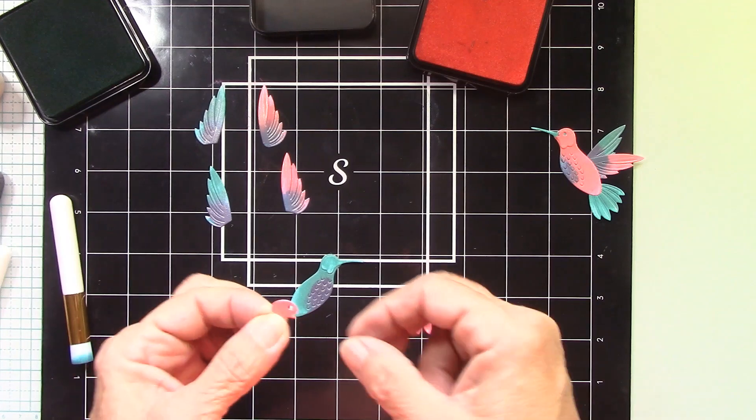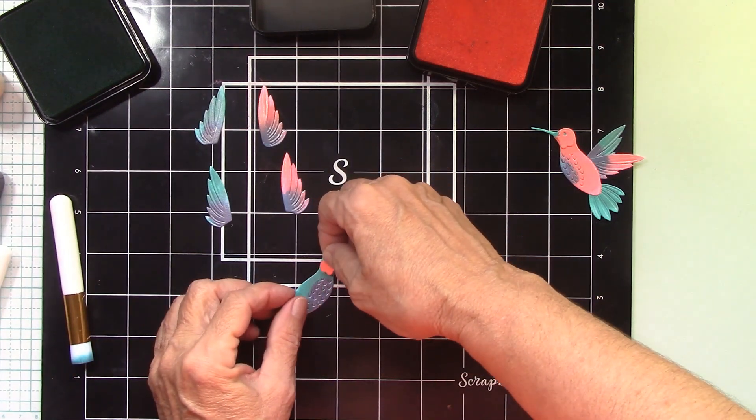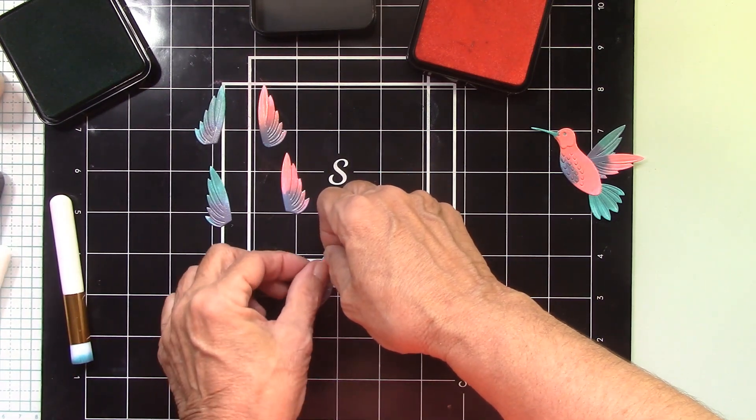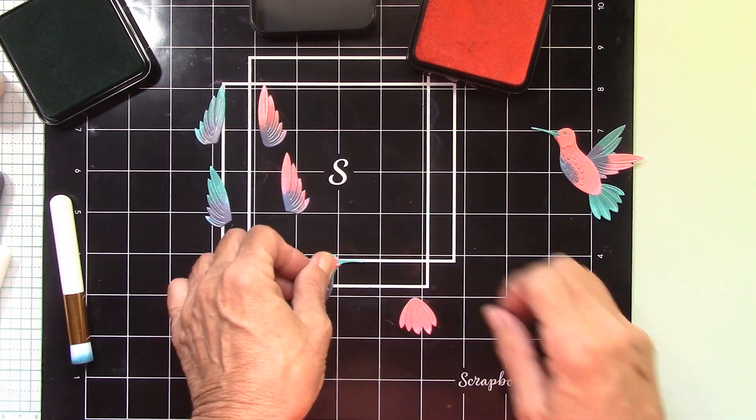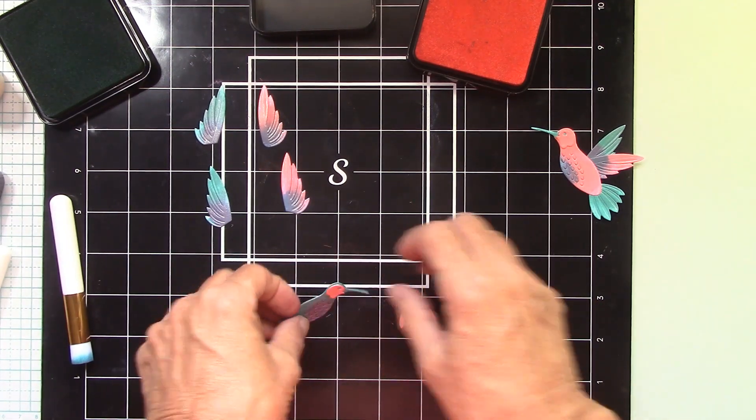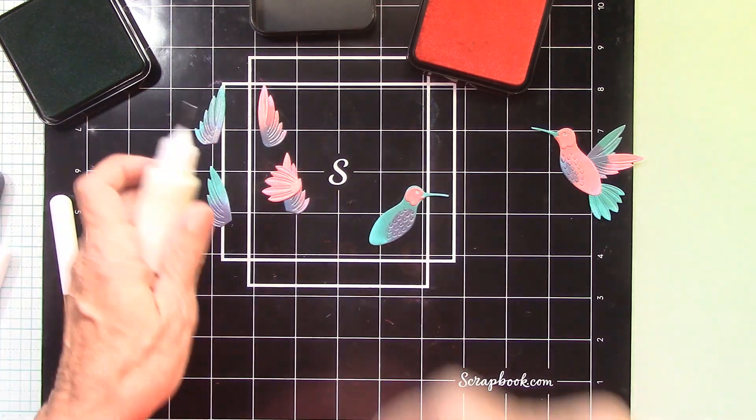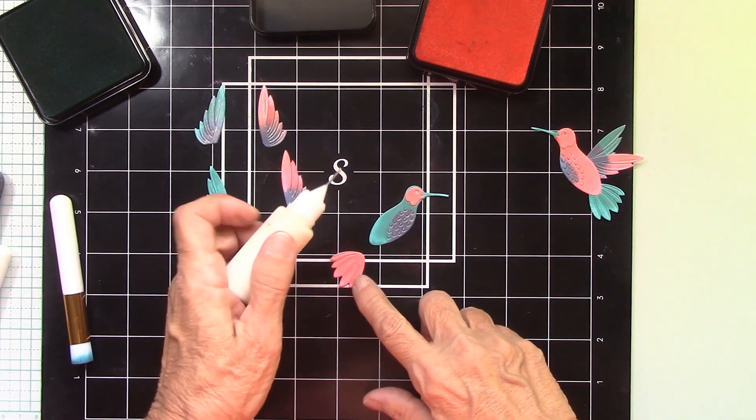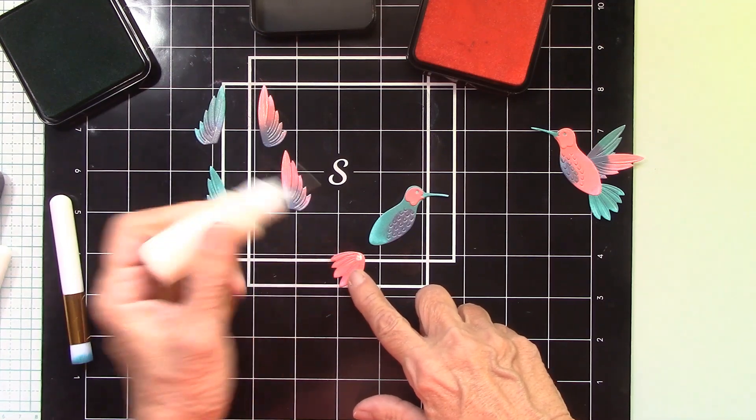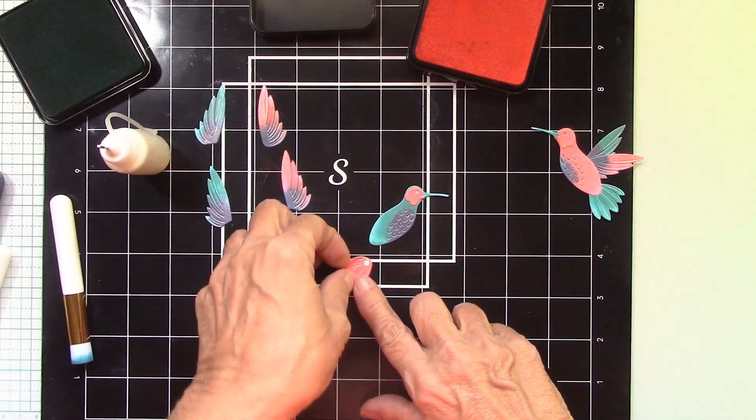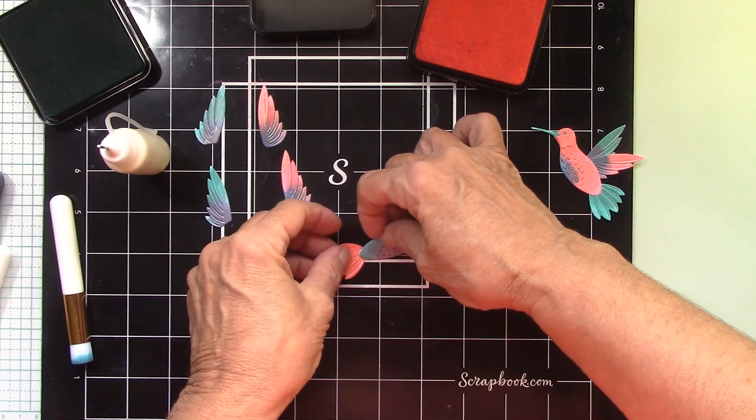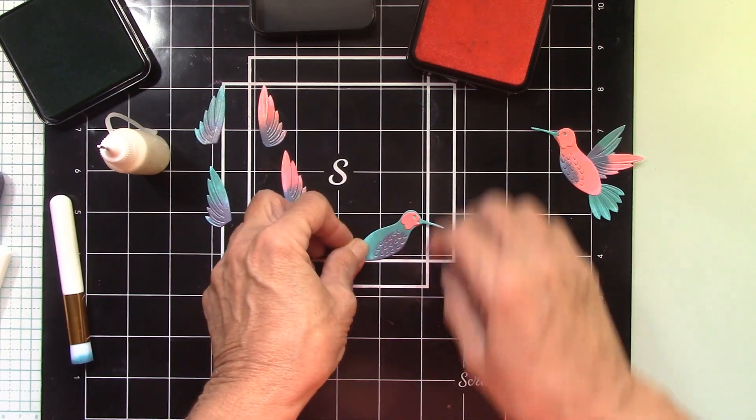That's what's wonderful too about this collection. You know, you could use, you could put these together with designer series paper if you wanted to. You can just cut colored cardstock. They came out so pretty. Their colors are just beautiful. And like I said, just two ink pads. Very, very, very simple for me.